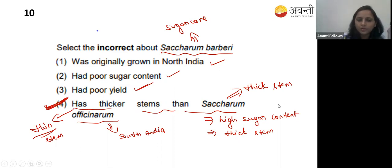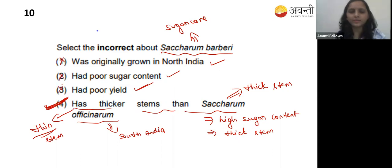Option four is incorrect - that is the correct answer. Saccharum barberi is originally grown in North India, has low sugar content and poor yield. The crossing with Saccharum officinarum gives good yield with high sugar content and thick stem.